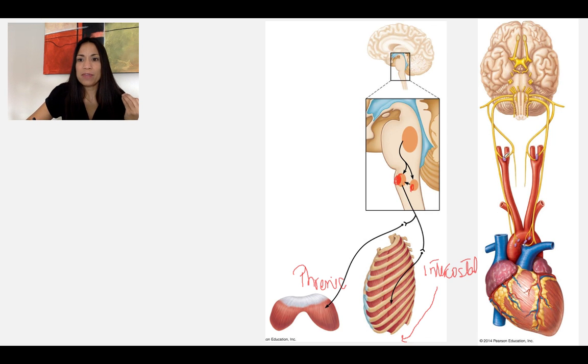It's also influenced by the information sent from several chemoreceptors. Chemoreceptors, remember, are receptors detecting or monitoring chemical changes. In this case, these chemoreceptors are located, as you can see here in the aortic arch, and right here where the common carotid artery branches into the internal and external carotid artery.